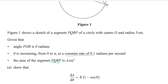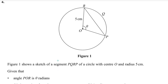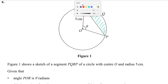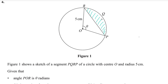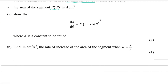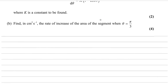Here PQRP is the area of the segment. You need to find the area of the segment, which is represented by A. To find this area, subtract the area of triangle POR from the area of sector POR. Area of sector minus area of triangle gives you the area of the segment.